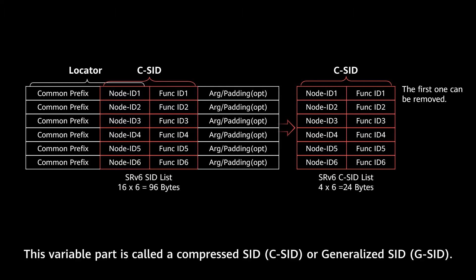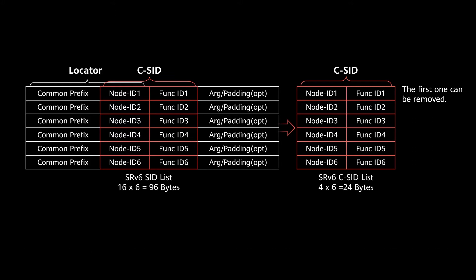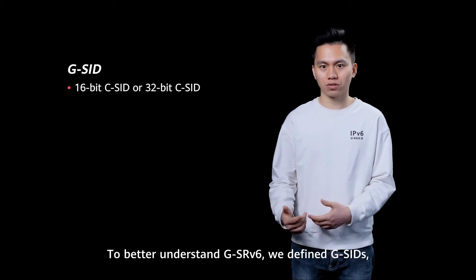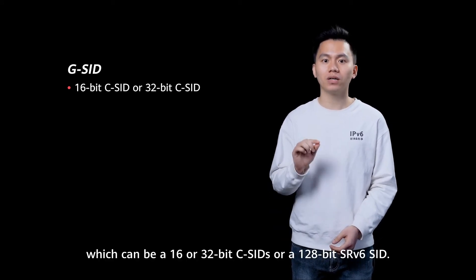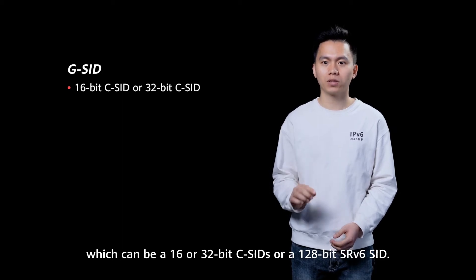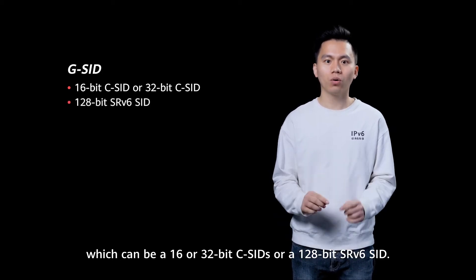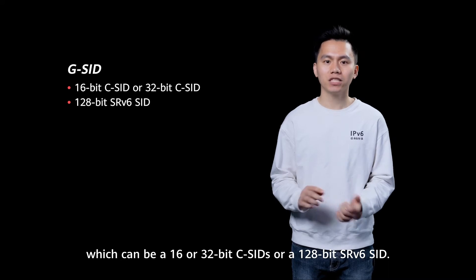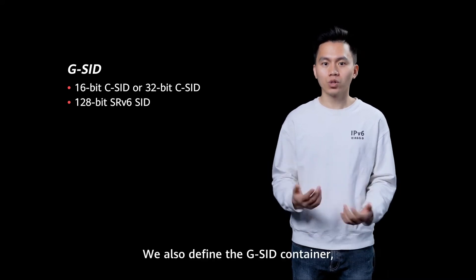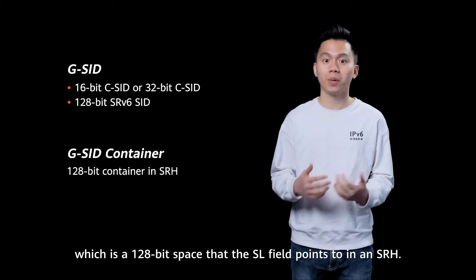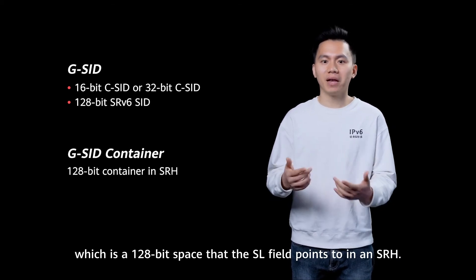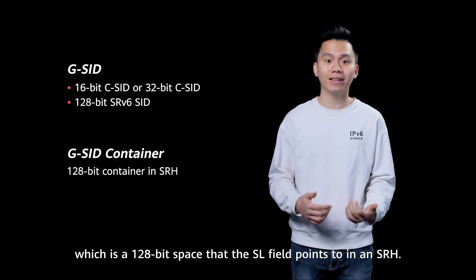The variable part is called a compressed segment, C-SID, or generalized segment, G-SID. To better understand GSRV6, we define G-SID, which can be a single 16-bit or 32-bit C-SID, or a single 128-bit SRV6 SID. We also define a G-SID container, which is a 128-bit space that the Segment Left field points to in the SRH.